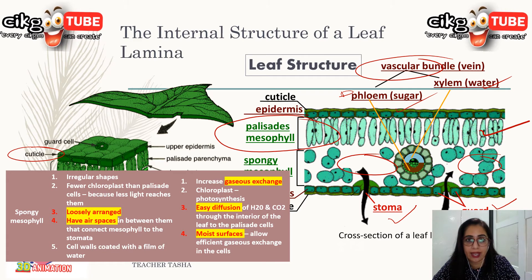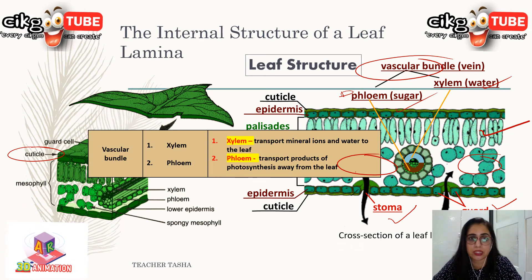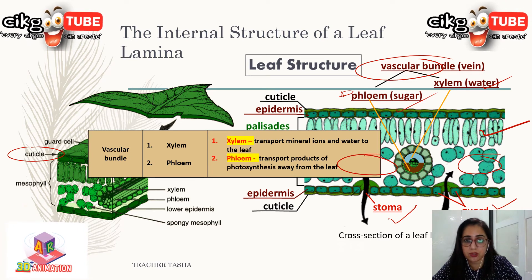The vascular bundle is located in the veins of the leaves. It consists of xylem and phloem tissues. Xylem transports water and mineral ions from the roots to the leaves, while phloem transports dissolved organic substances — the products of photosynthesis — from the leaves to all parts of the plant. Those are the structures of a leaf.